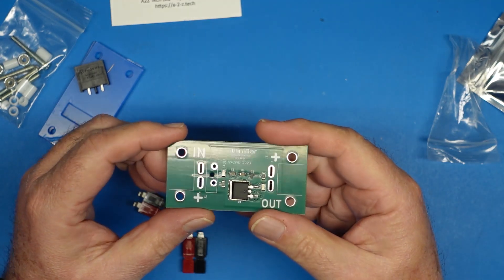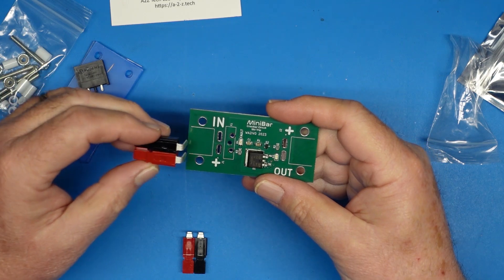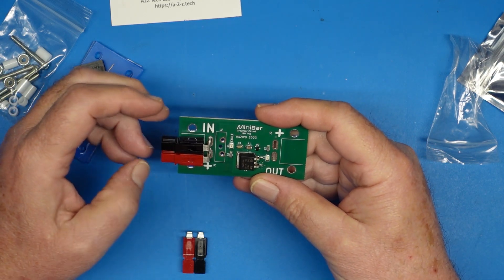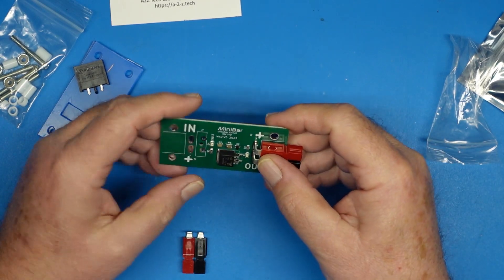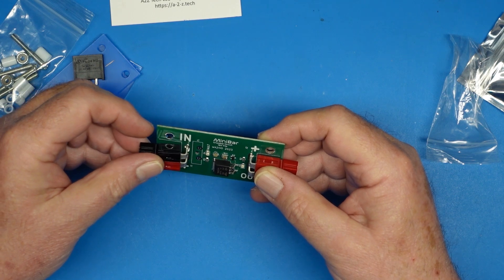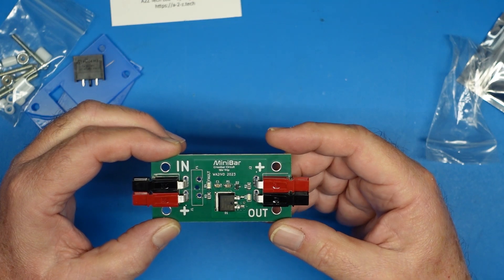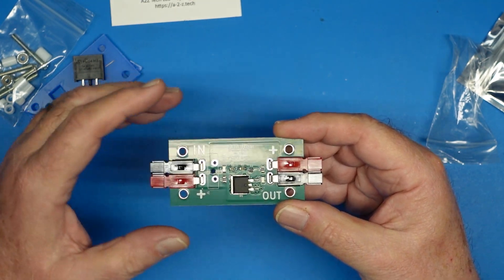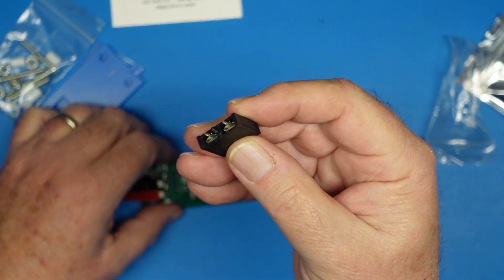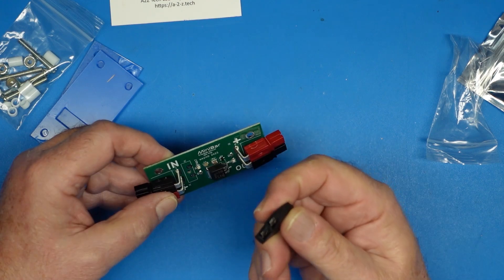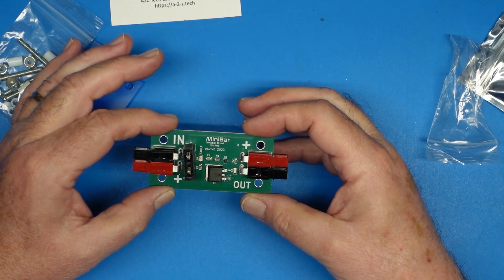You'll see that the board is marked in and out, positive and negative. When you put this kit together, our positives line up like so. That's how this is going to go. The fuse holder mounts here, and this is keyed on the actual fuse holder to match the board, so you can't put this in the wrong way. It goes like that, and then we solder the whole thing together.